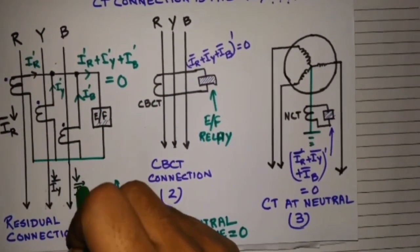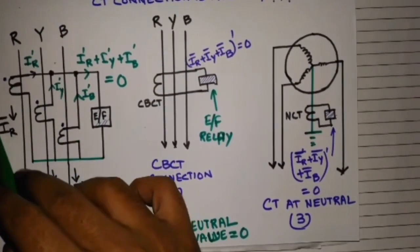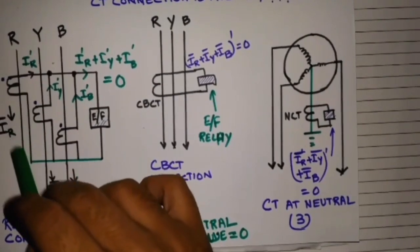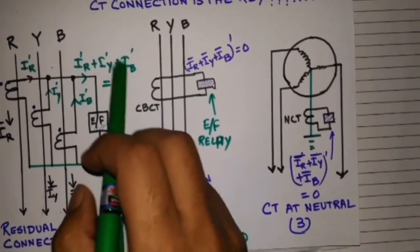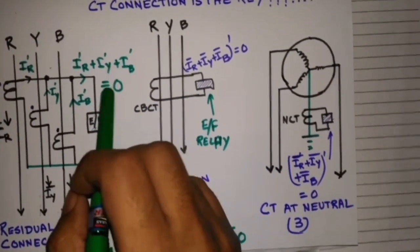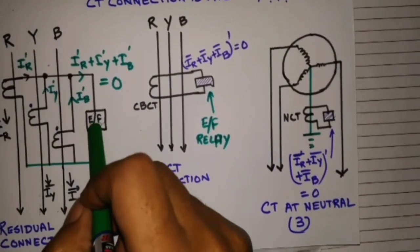But here the reflection is IR dash, IY dash, and IB dash. I have mentioned the dash because the magnitude is just different, but they are also 120 degrees apart and balanced since their primary currents are balanced.